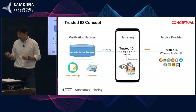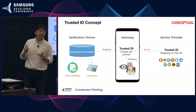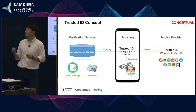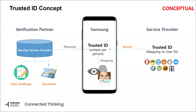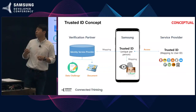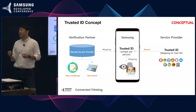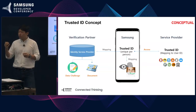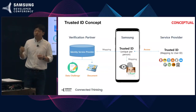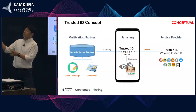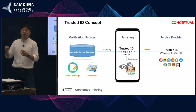With Trusted ID, we can have verified identity information and have the verification results securely stored locally on the phone. On one hand, we'll have verification partners who work with carriers and on document and ID card verification technologies. Through partnership, we can implement methods to verify the identity of the person who owns the phone. Once the person's identified, we can store the verified results locally on the phone and tie that with biometrics so that when a person does biometric authentication with user consent, we release the verification result as well as verified personal data.